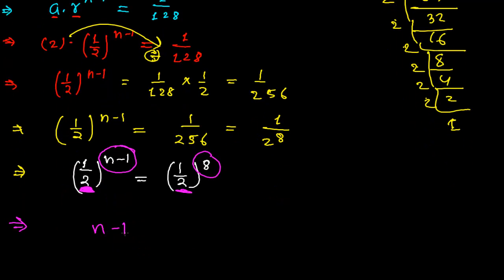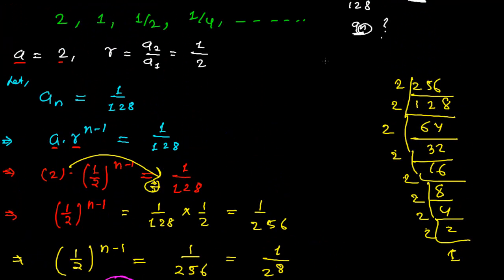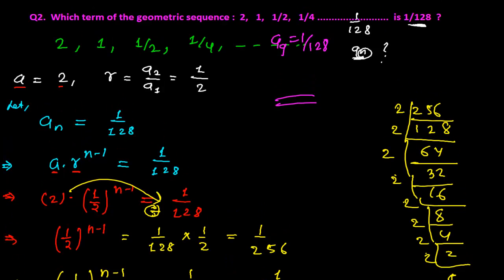This gives us n equals 9. It means the ninth term has the value 1/128. In this sequence, the ninth term aₙ has the value 1/128. Like this you need to find out which term exactly has this value.